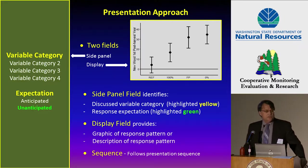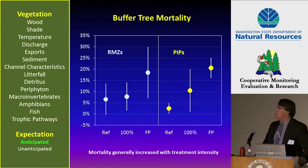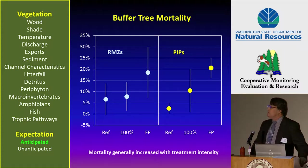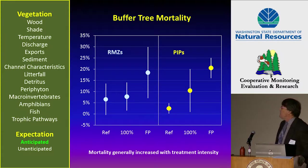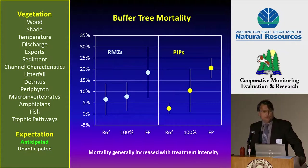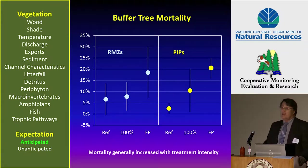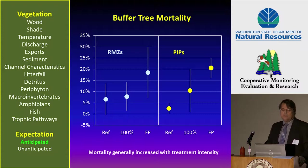The sequence I will follow will be the same sequence as the speakers you'll see through the day. The first variable is vegetation. We have two vegetation variables. The first one is buffer tree mortality. In the right hand panel, the two panels are split into the riparian management zone panel on the left — RMZs — and the PIP panel on the right. What we see is that buffer tree mortality generally increased regardless of whether you were in the riparian management zone or in the PIP across the treatment gradient. In other words, with increase in treatment intensity you had increased buffer tree mortality.